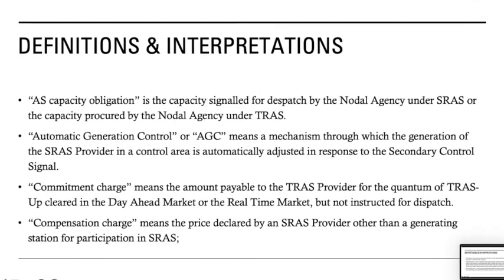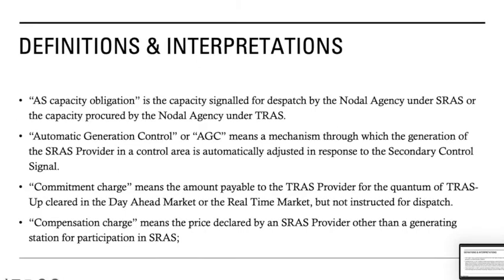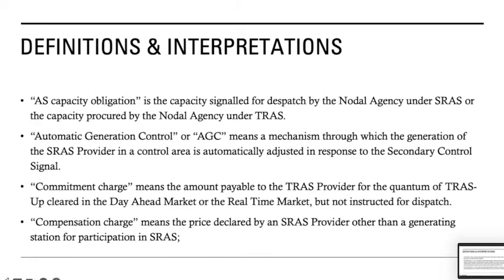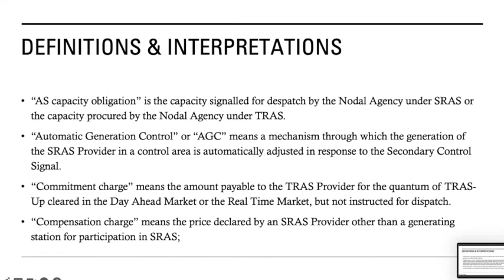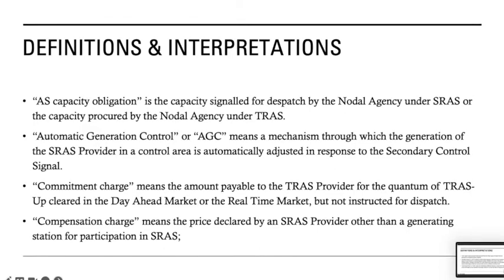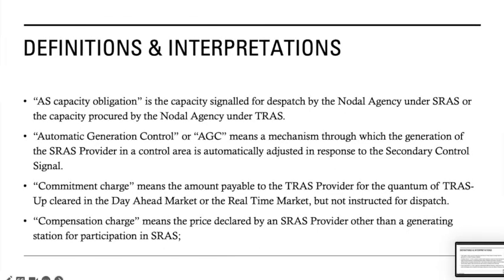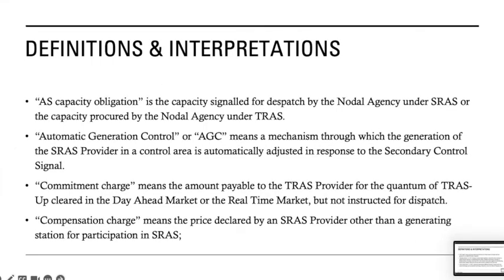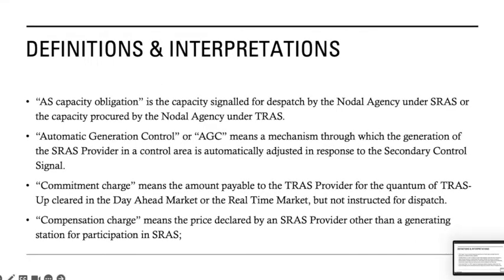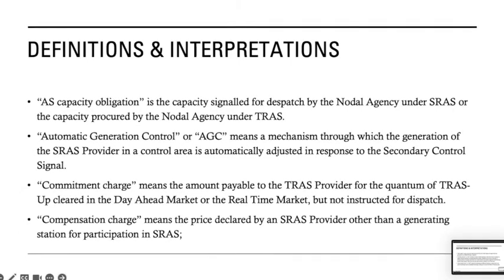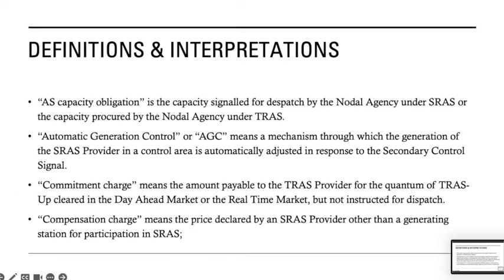The next term is Commitment Charge, that is the amount payable to the TRS provider for the upward generation as cleared in the day-ahead market or in the real-time market, as the case may be, but not instructed for dispatch. For example, if a unit is agreeing that it will provide the required ancillary services as and when required, then a commitment charge is paid to that particular unit as per the day-ahead market or the real-time market.